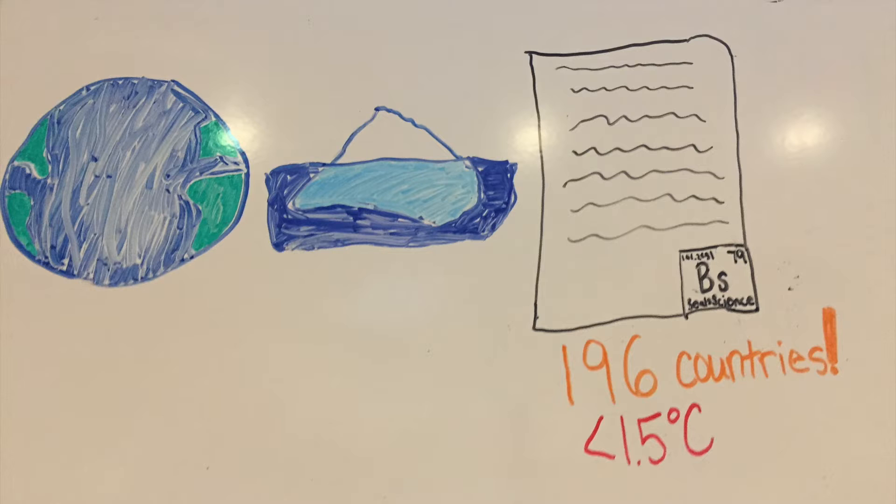The melting of glaciers and rising sea levels are some of the effects of global warming. If the trend continues, some major port cities like New Orleans and Miami will be submerged in water by the year 2100. How do we reverse this?